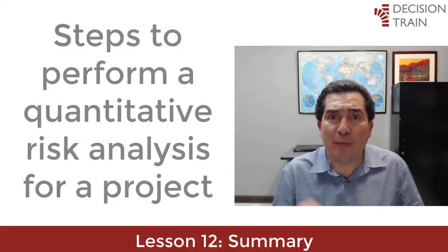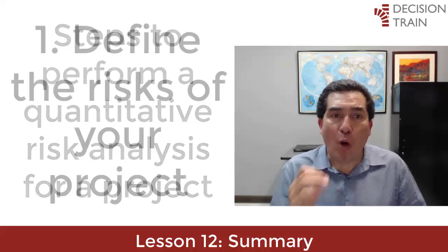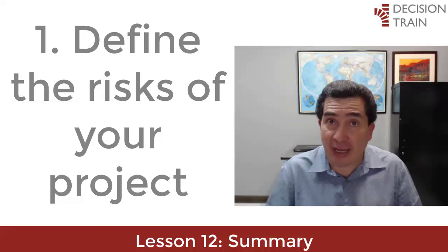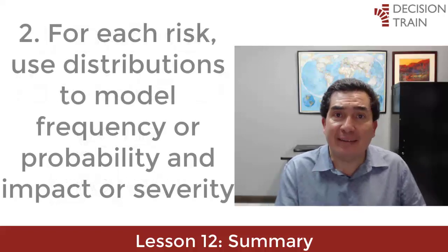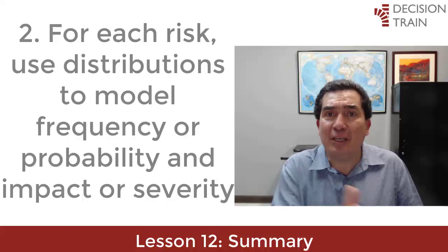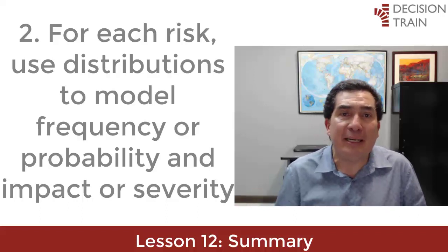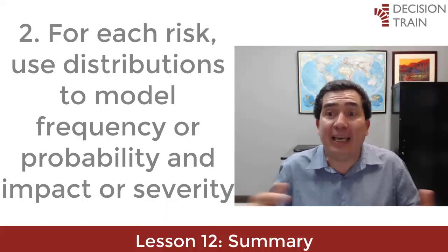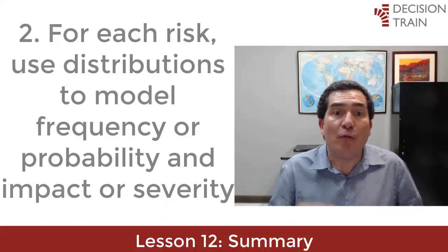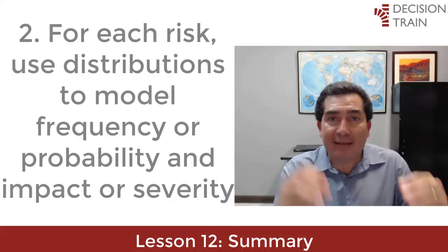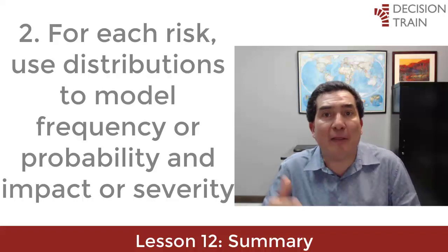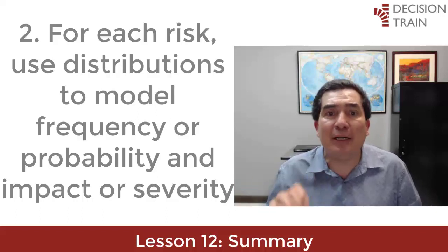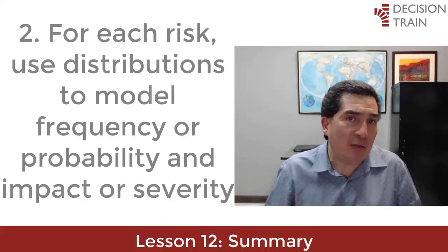Let us summarize the steps to perform a quantitative risk analysis for a project. One: define the risks of your project — this is probably also the first step in qualitative risk analysis. Two: each listed risk must now fall into categories according to the two dimensions, frequency or probability and impact or severity. Instead of using colors and arbitrary and subjective classifications for the categorization of each risk, we use probability distributions here — a discrete probability distribution to describe the frequency or probability, and another continuous probability distribution to describe the impact or severity.